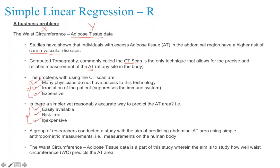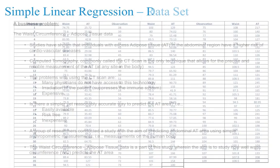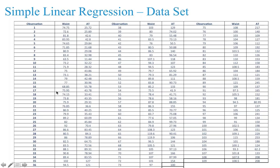A group of researchers conducted a study with the aim of predicting the abdominal adipose tissue area using simple anthropometric measurements — measurements on the human body. They collected data pertaining to waist circumference and adipose tissue, and here is the historical data with observations, waist circumference values, and adipose tissue values.